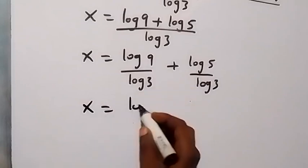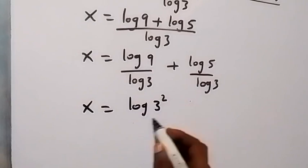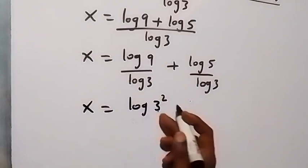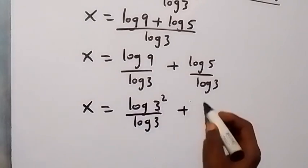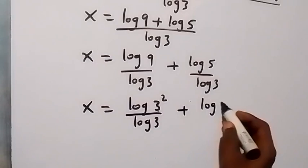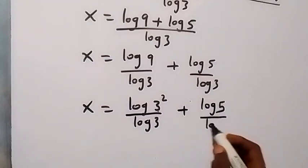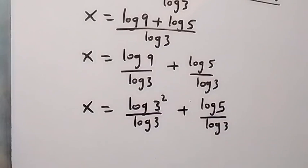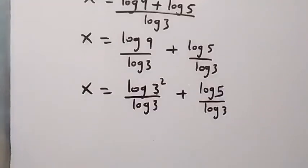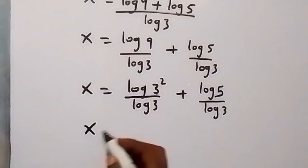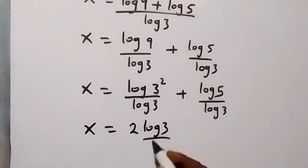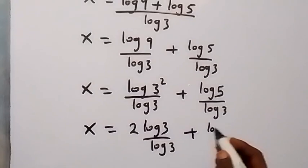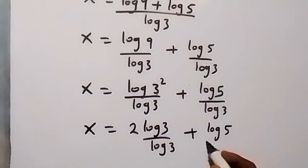We can write log 9 as log 3 squared, since 3 squared equals 9. So we have log(3²) over log 3 plus log 5 over log 3. Applying the power rule again, we bring the 2 out front: x equals 2 log 3 over log 3 plus log 5 over log 3.